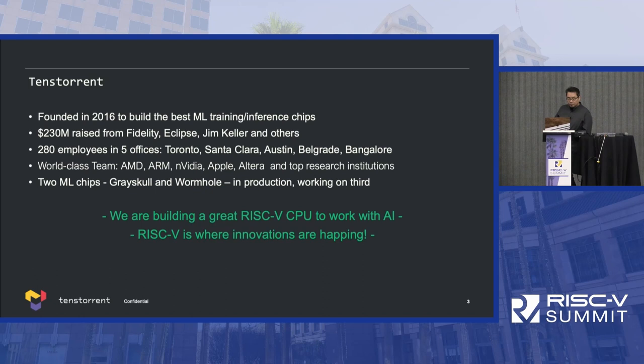We've hired a world-class team from AMD, ARM, NVIDIA, Apple, Altera, and top research institutions around the world. We already have two machine learning chips in production — Grayskull and Wormhole — and we are working on the third one.